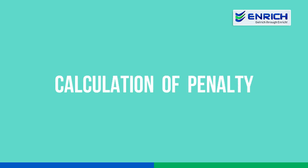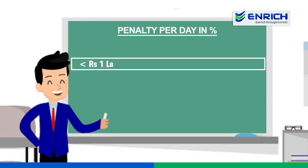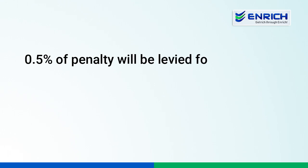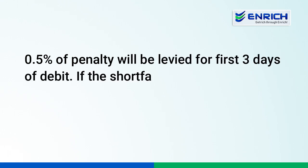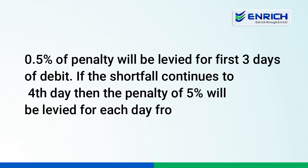Now let's look at the calculation of penalty. If there is a debit balance per segment per day and the margin shortfall amount is less than $100 and also less than 10% of the applicable margin, a 0.5% penalty on the shortage amount will be levied. If the shortfall is greater than $100 or more than 10% of the applicable margin, then 1% of the shortage amount will be levied as penalty. The 0.5% penalty will be levied for the first 3 days of debit. If the shortfall continues to the 4th day, a penalty of 5% will be levied for each day from the 4th day onwards.